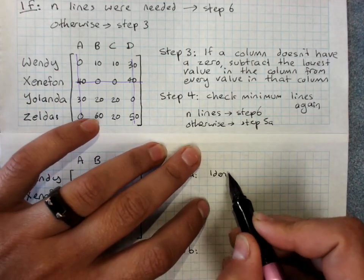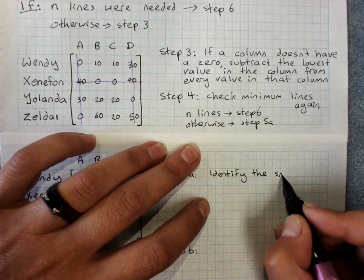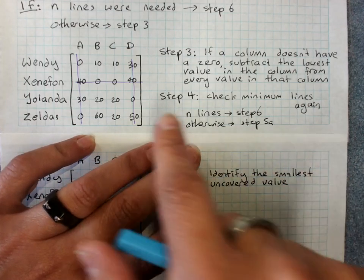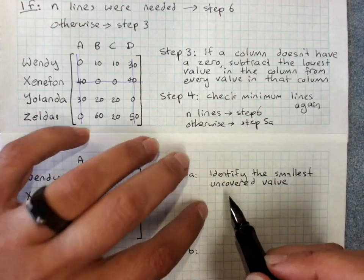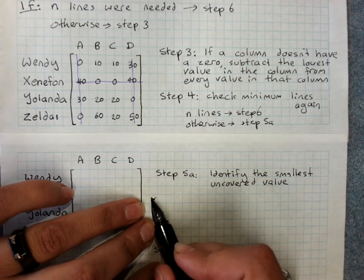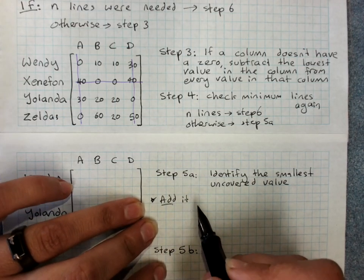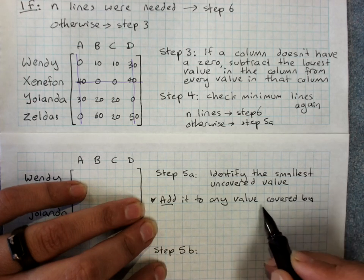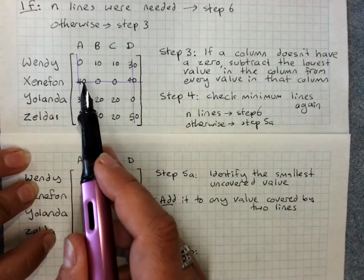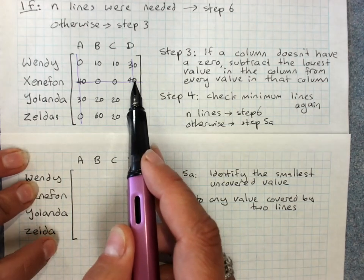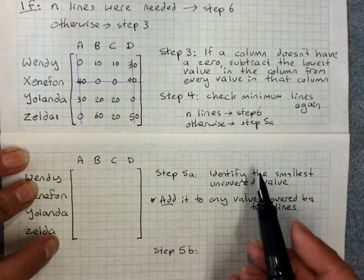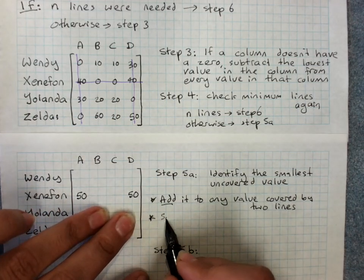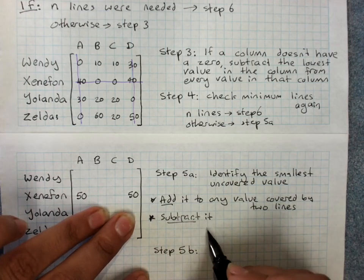Step five a. First up, identify the smallest uncovered value. So that would be ten. Now, might need some more space here. Add that value to any value covered by two lines. So these two, Xenophon A and Xenophon D, are covered by two lines. So I'm going to add that smallest value of ten to those.